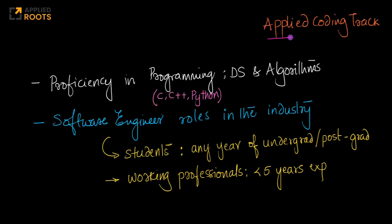In this Applied Coding Track course, we will focus on these three programming languages: C, C++, and Python, along with data structures and algorithms that are relevant in the industry. This course will help you prepare for software engineer roles in the industry and is suitable both for students and working professionals.